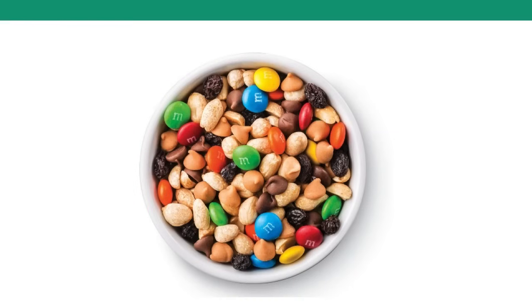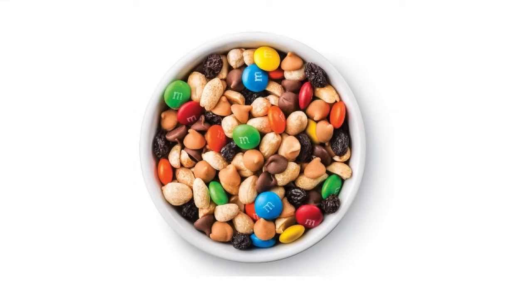Now it's time for you to practice on your own. Here is a bowl of Trail Mix. What does this represent? This bowl represents a mixture. Two or more things are being mixed together, but they are not evenly mixed. If you were to grab a handful, sometimes you'd end up with a bunch of M&Ms, while other times you might end up with a bunch of nuts or raisins. So this is a mixture, but not a solution.